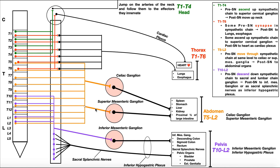The second pathway consists mostly of the lower preganglionic neurons that converge and run together, with the synapse occurring in the superior mesenteric ganglion. That postganglionic neuron then runs into the lower half of the abdomen. Collectively, the postganglionic neurons from the celiac ganglion and superior mesenteric ganglion control sympathetic functions of the spleen, stomach, liver, kidney, and the proximal half of the colon or large intestine.